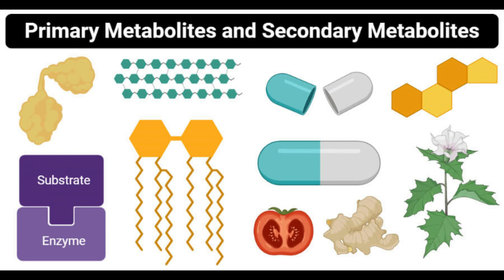Bacterial pigments produced for industrial purposes by microbial fermentation have several advantages such as cheaper production, easier extraction, higher yields through strain improvement, no lack of raw materials, and no seasonal limitations. Biopigments produced from microorganisms are preferred over those from plants because of their stability and availability for cultivation throughout the year. Examples of these pigments include chlorophyll, astaxanthin, zeaxanthin, indigoidine, rhodopsin, etc.